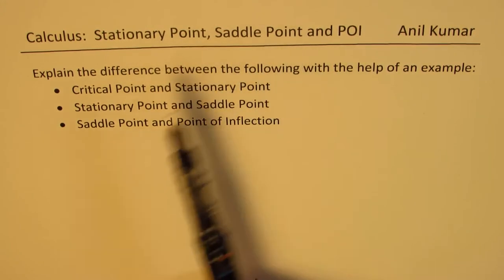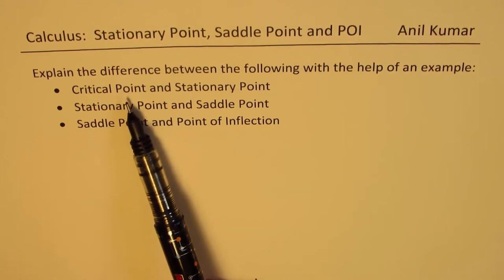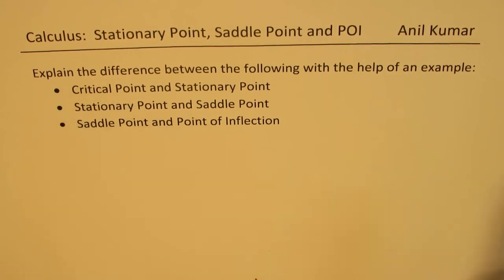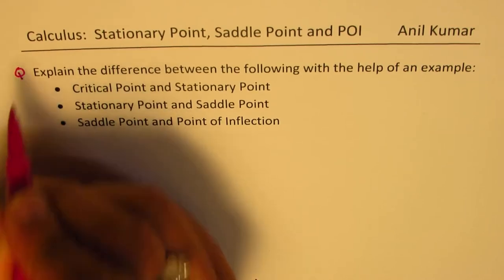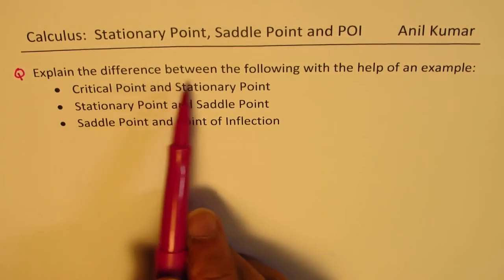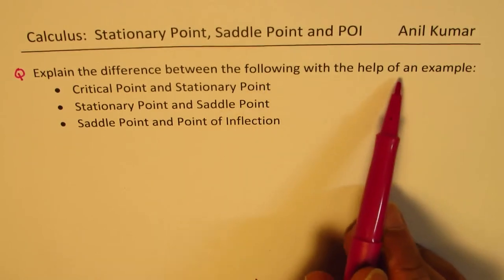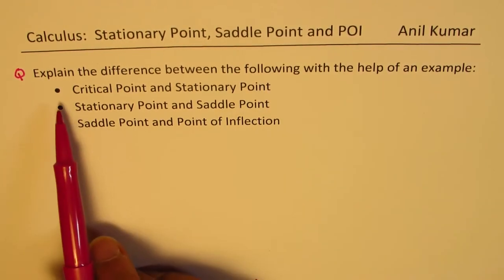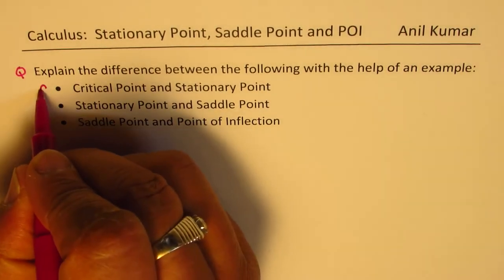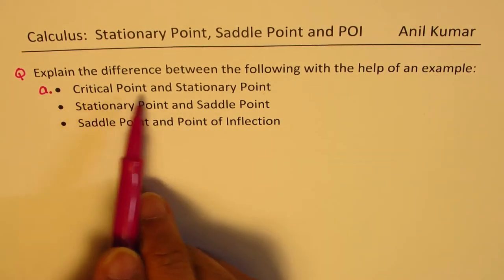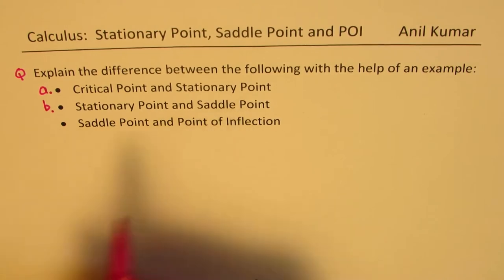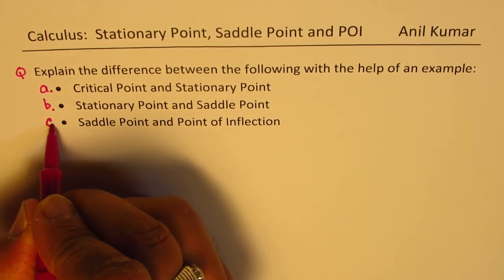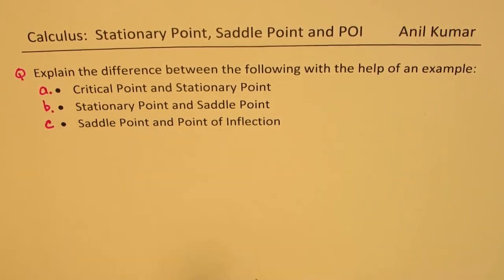They are actually related with the critical point. I have an extremely important question for you. Explain the difference between the following with the help of an example: A) Critical point and stationary point? B) Stationary point and saddle point? And C) Saddle point and point of inflection.